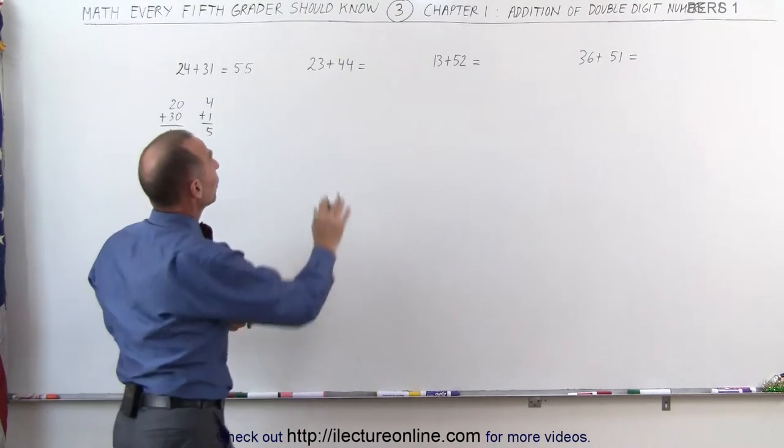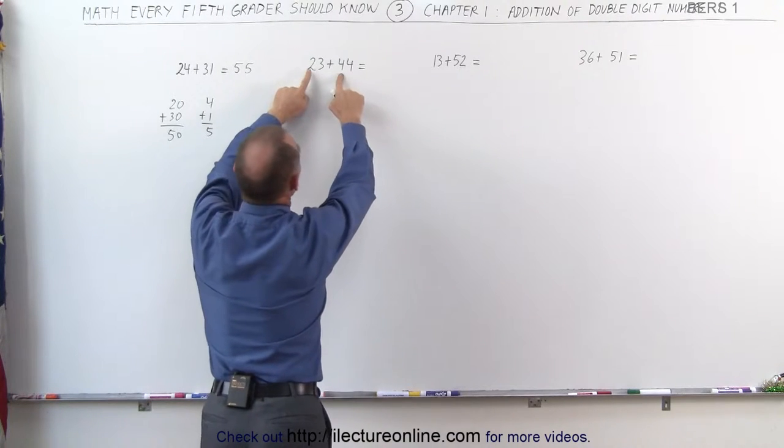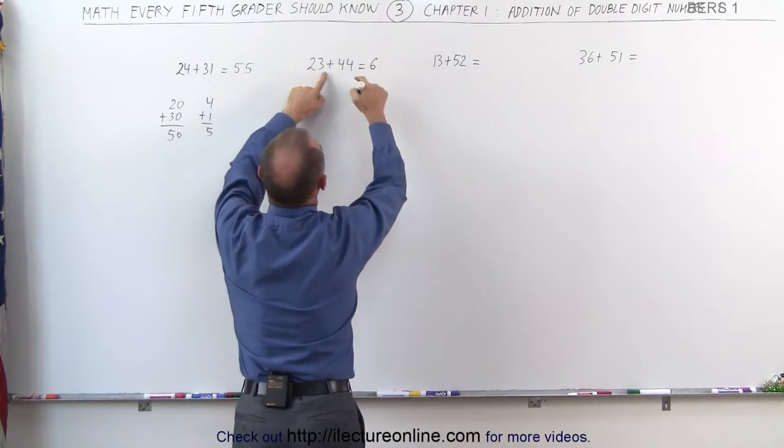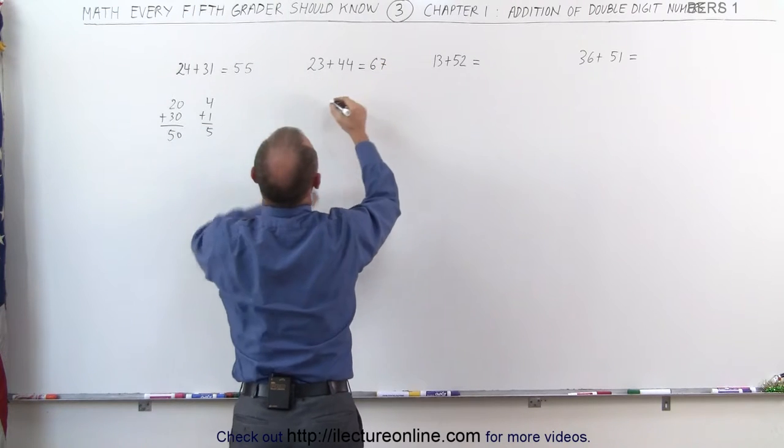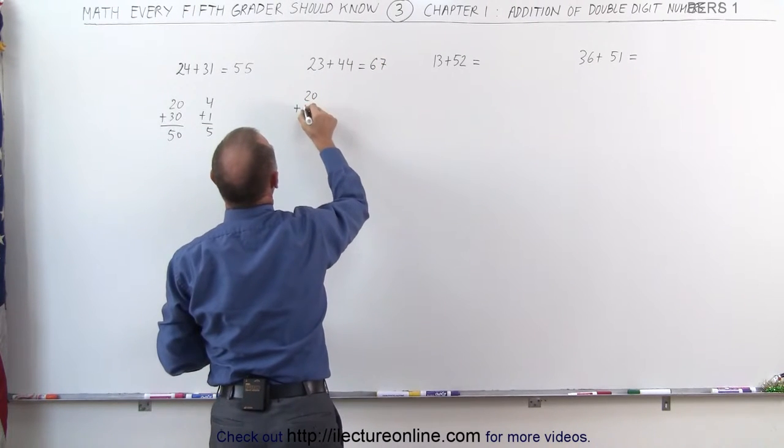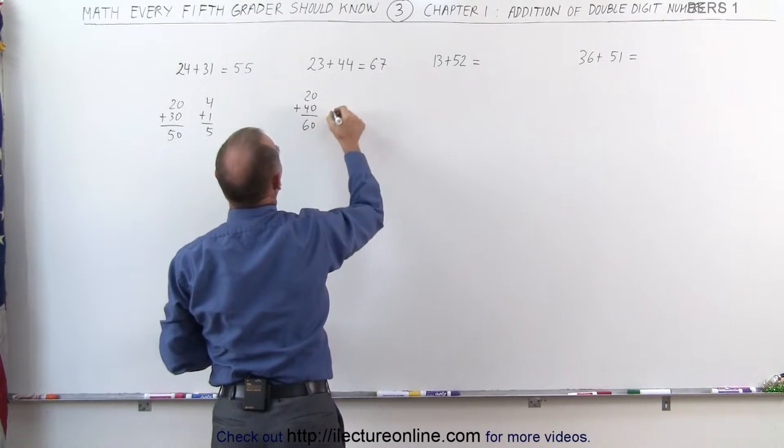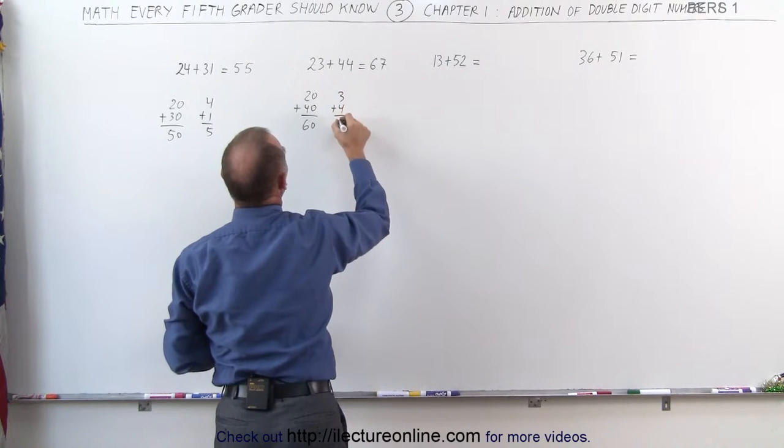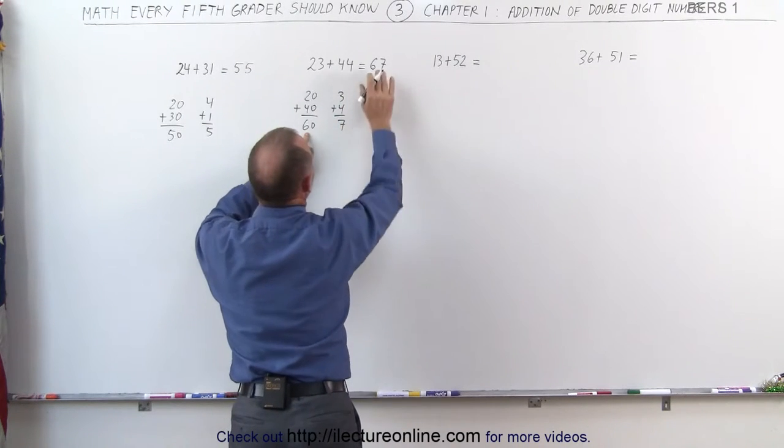Same over here, 23 plus 44, add the two first numbers together, 2 plus 4, that is 6. 3 plus 4, that is 7. In other words, we have 20 plus 40, which is 60. And 3 plus 4, which is 7. 67 altogether.